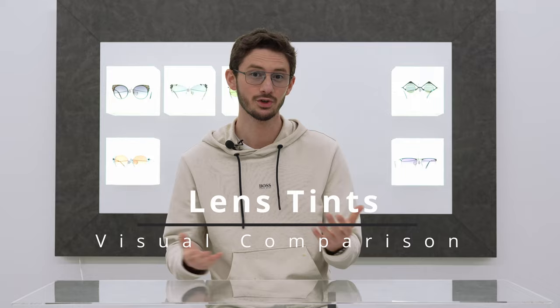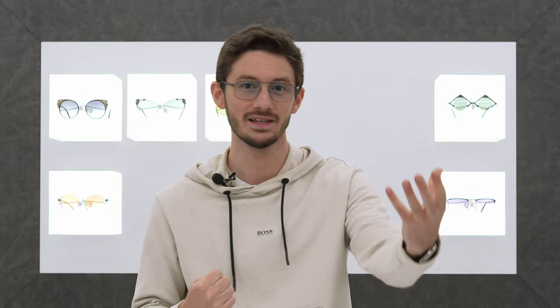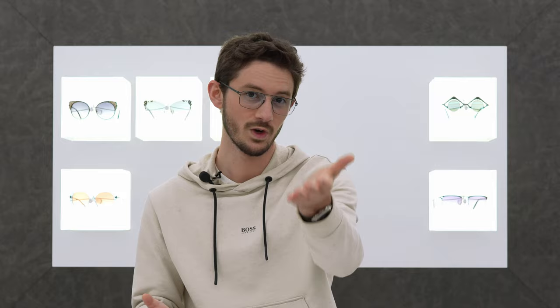Choosing the right lens tint for your glasses or sunglasses is a really crucial decision — not just because of how it makes your eyewear look, but also because it affects how you see the world. In this video we're going to be comparing not just the three main lens colours — grey, brown, and green — but also a few more specialised lens colours to see if we can really tell the difference.